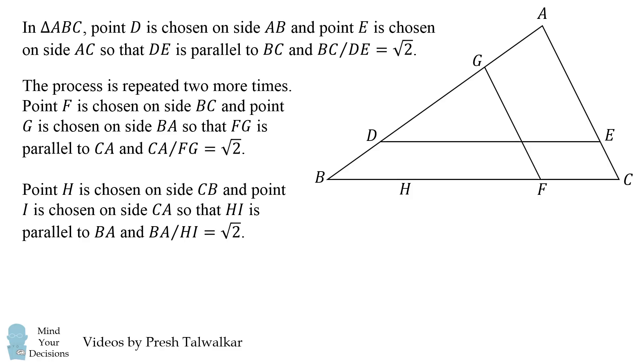Point H is chosen on side CB and point I is chosen on side CA so that HI is parallel to BA, and BA divided by HI is equal to the square root of 2.